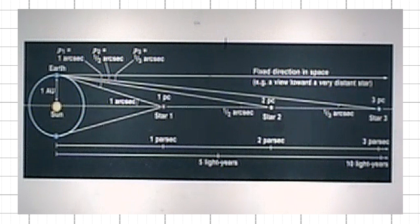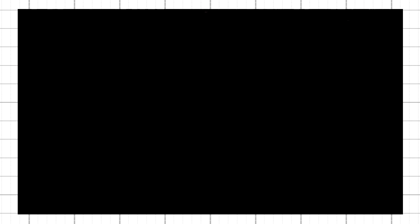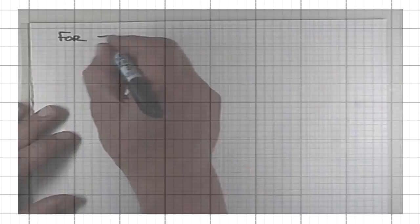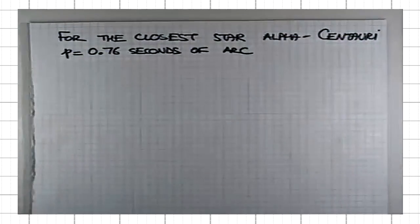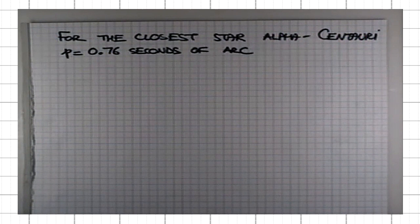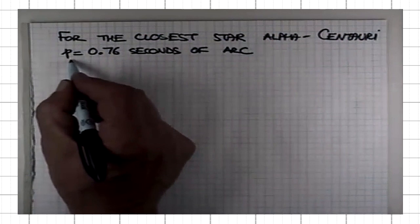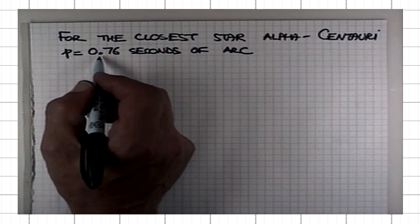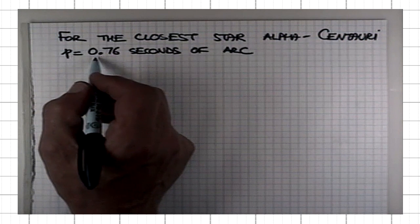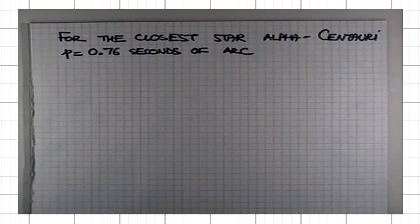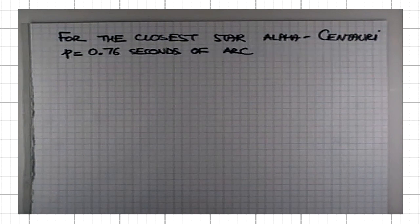What actually distance of one parsec, what does it actually mean? For the closest star, alpha centauri, the parallax angle is 0.76 seconds of arc. Of course, for more distance stars, the parallax then gets smaller than this value. This is the largest parallax angle for the actual stars that we can see, observe. All the other stars because they are more distant, they will be observed at smaller parallax angle.